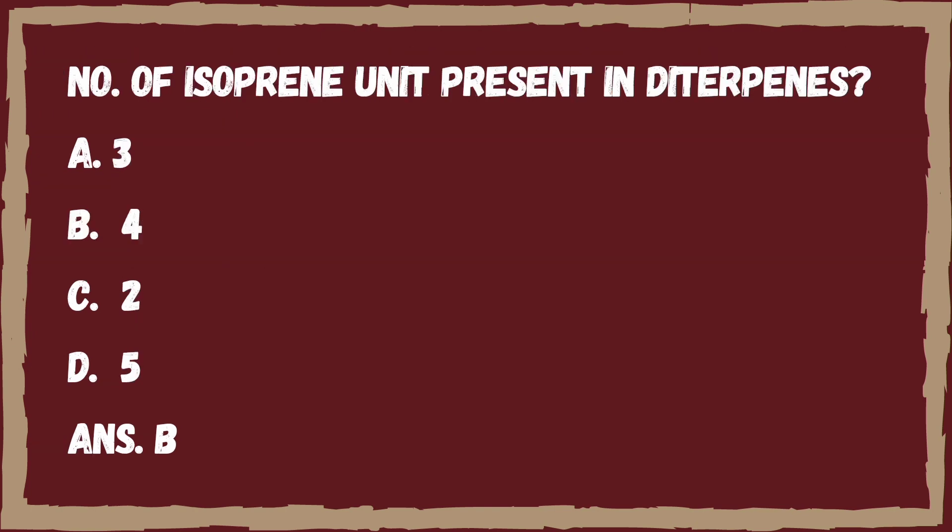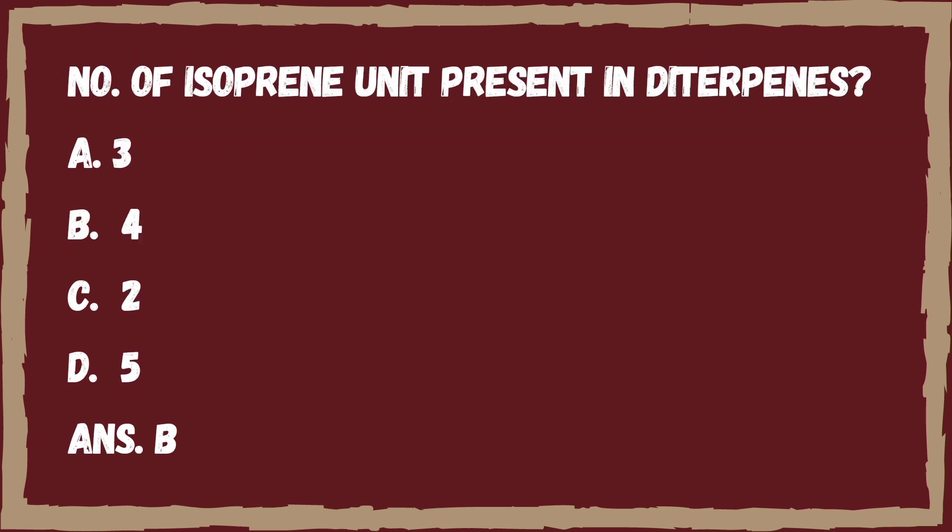Next question: number of isoprene units present in diterpenes? Option A, 3. Option B, 4. Option C, 2. Option D, 5. The right answer is Option B, that is 4. Diterpenes are mainly found in coffee and liver. Their uses include anti-inflammatory, antimicrobial, and antispasmodic activity.